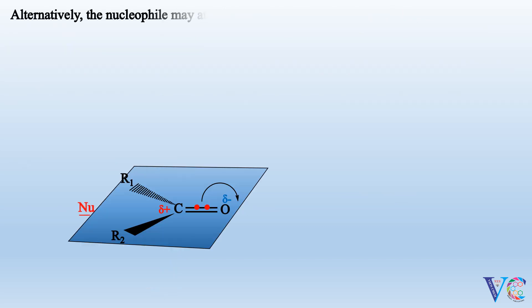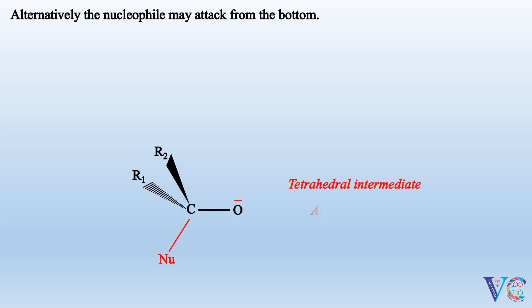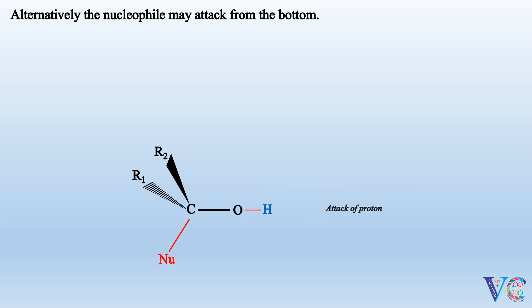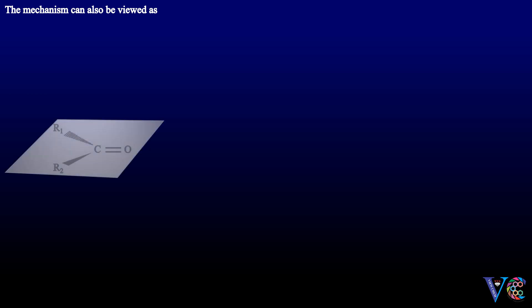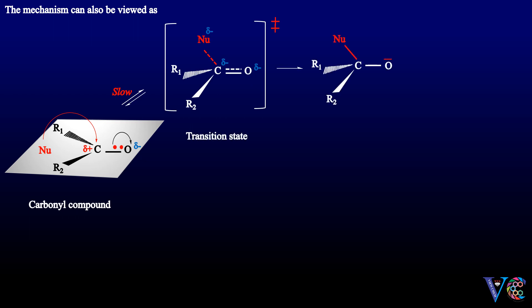Alternatively, the nucleophile may attack from the bottom, forming a transition state, then a tetrahedral intermediate, followed by attack of a proton.